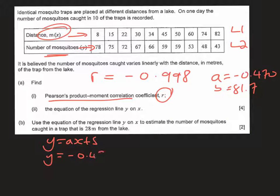So in the final part then, we're asked to use the equation of the regression line which we've just found to estimate the number of mosquitoes caught in a trap that is 28 meters from the lake. So we can see here that the smallest distance we have is 8, the largest distance we have is 82.